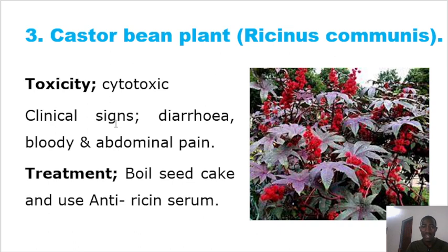The castor bean plant is cytotoxic, meaning it affects the cells. Clinical signs include diarrhea, bloody stool, and abdominal pain. Treatment involves the use of antiricin serum.